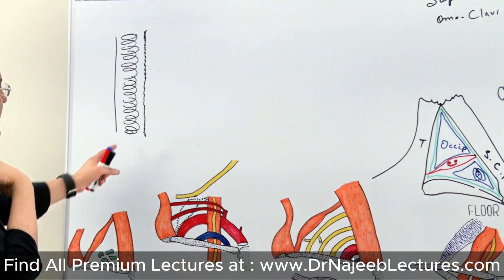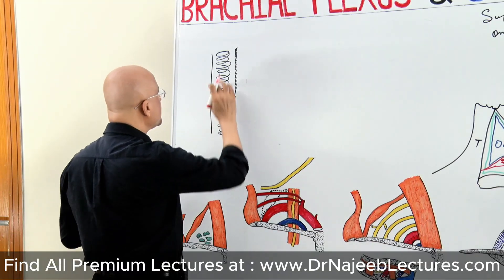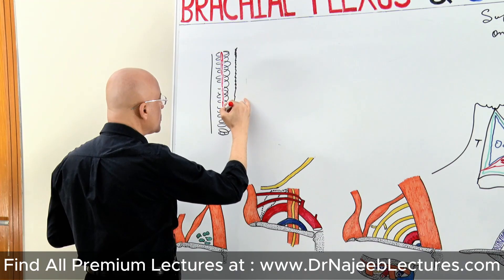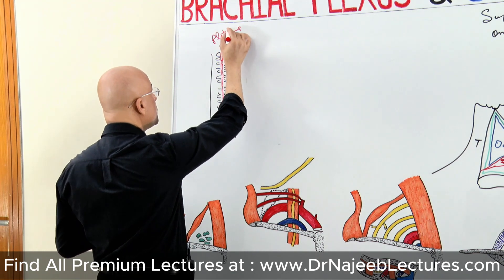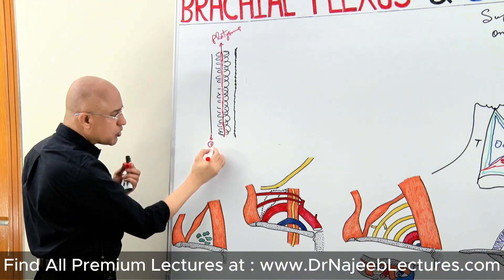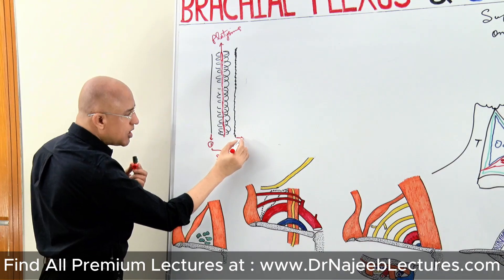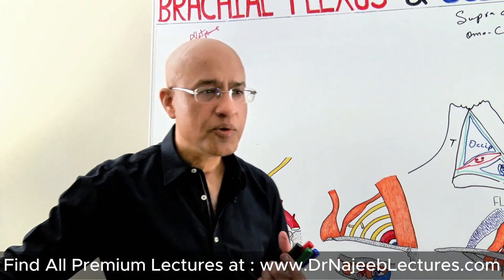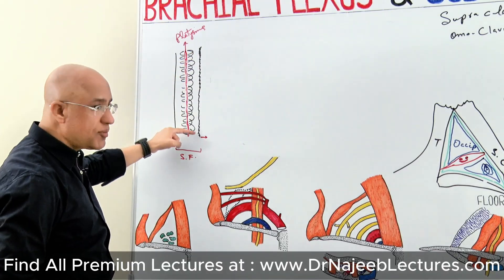In the superficial fascia of this region, there is a thin sheet of muscle called the platysma. So the layers are: skin, then superficial fascia containing the platysma, then deep fascia. This deep fascia of the neck has a very special name — it is called the investing layer of the deep cervical fascia.